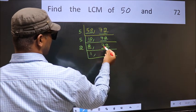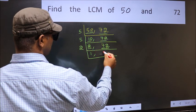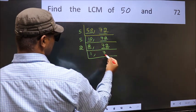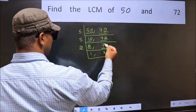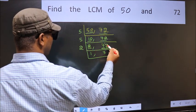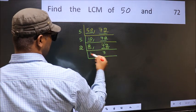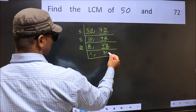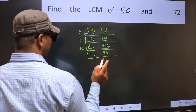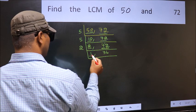First digit 7 — a number close to 7 in the 2 table is 2 times 3 = 6. 7 minus 6 is 1, carried forward gives 12. When do we get 12 in the 2 table? 2 times 6 is 12. Now we got 1 here.